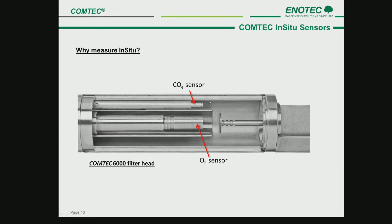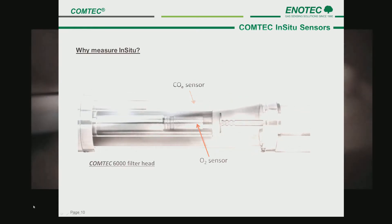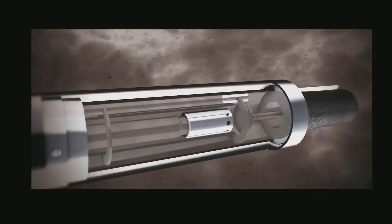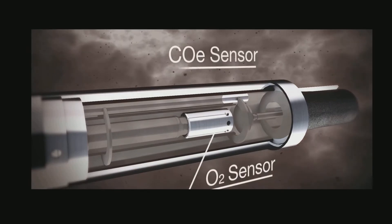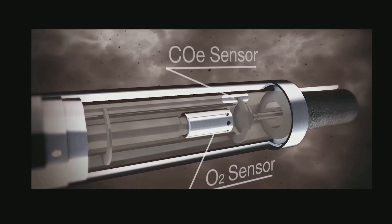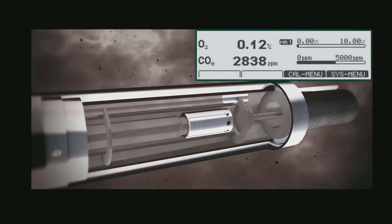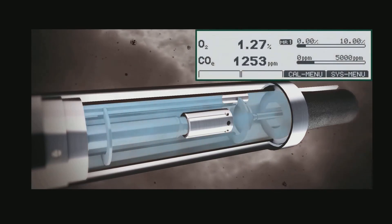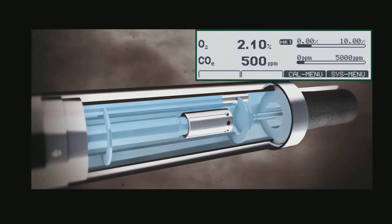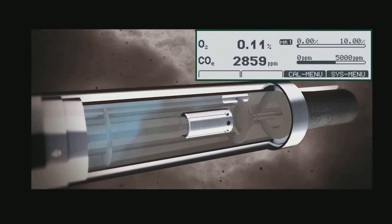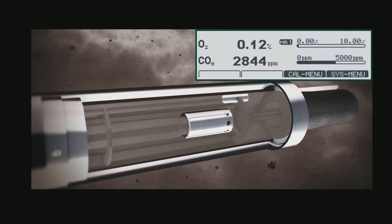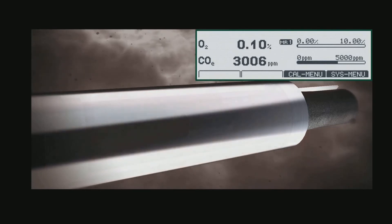This is a sectional view of the Comtec filter head. Here the COE sensor and the O2 sensor can be seen directly behind the diffusion filter. This video shows a Comtec sensor verification taking place. First, one can see the filter head filled with process gas surrounding the sensors, and the measured values can be seen. Test gas is applied directly from the controller, which includes a full pneumatic system. Test gas displaces the process gas very quickly and the test gas bottle values are reached. The measured values are proven to be true. The test gas is switched off and the process gas is once again measured.